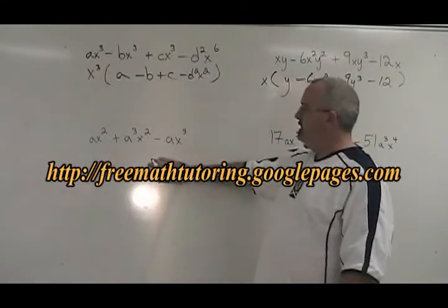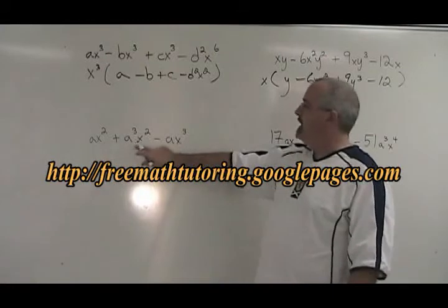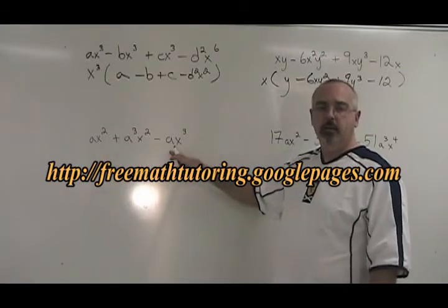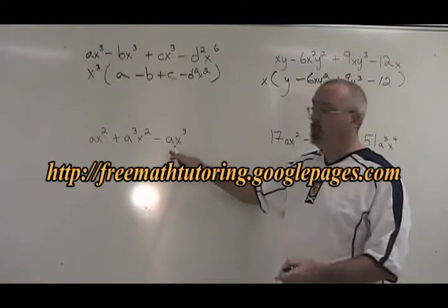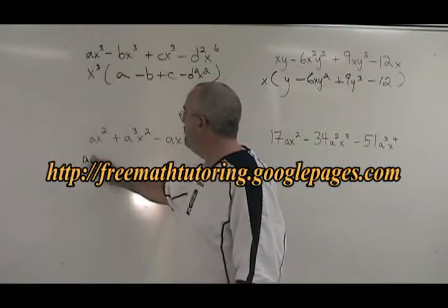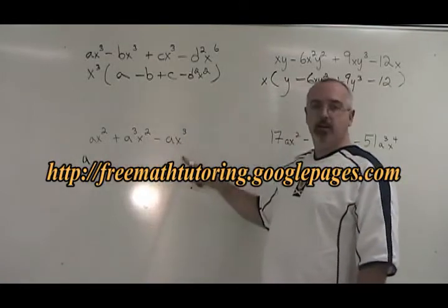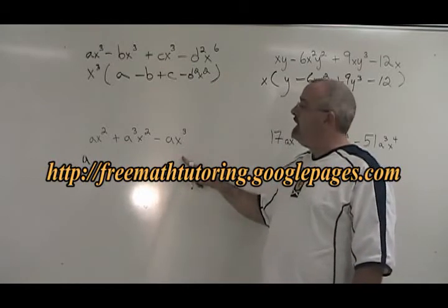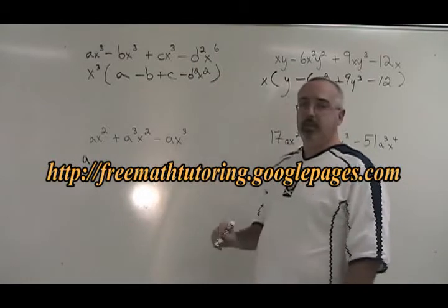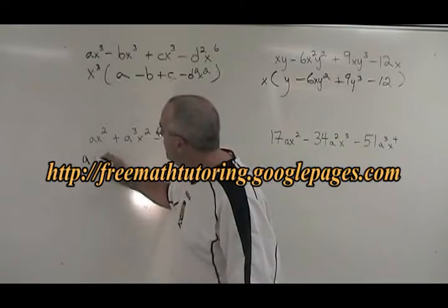In this third expression, we have an A, an A cubed, and an A. The smallest one we saw was an A, so we are going to factor out an A. But we also have X squared, X squared, and X cubed. We can take out more. The smallest that we saw in the X's was X squared. We can take out A, X squared.